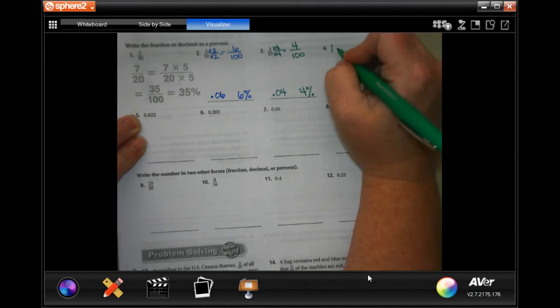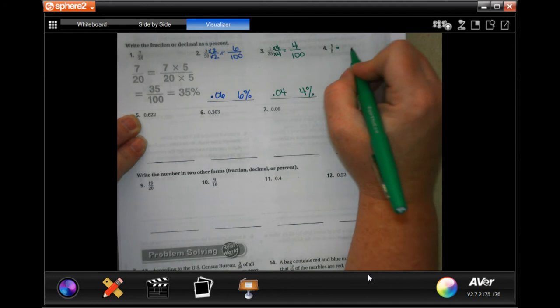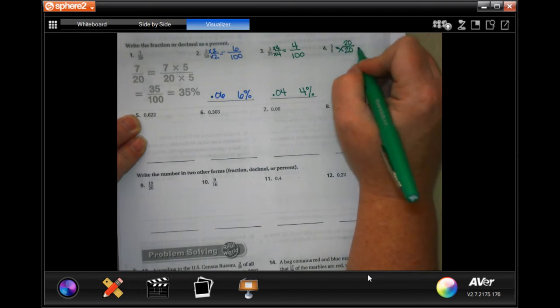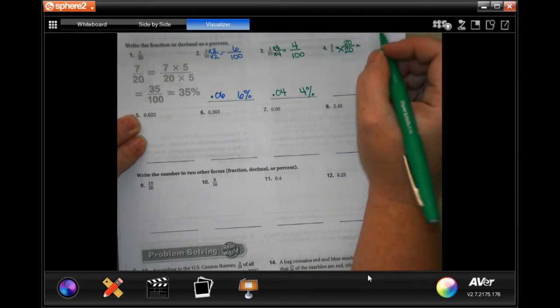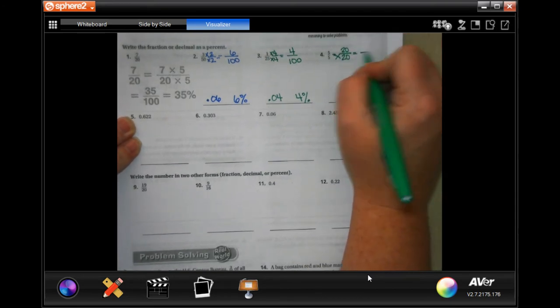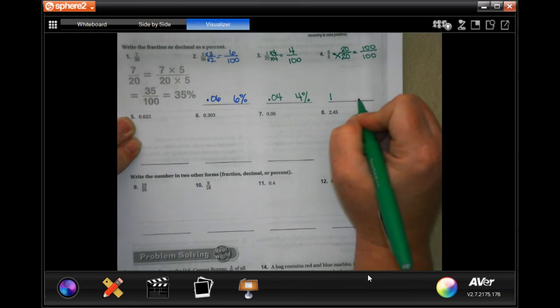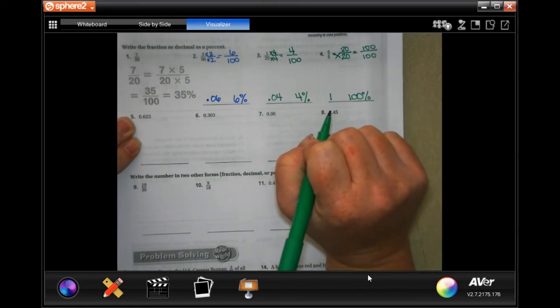Now, to get 5 to 100, we have to multiply it by 20, because there's 20 nickels and a dollar, and nickels are worth 5. Now, we're going to have 100, but we're going to have 100 up here, too. Which means, you're going to have 1, or you're going to have 100%.